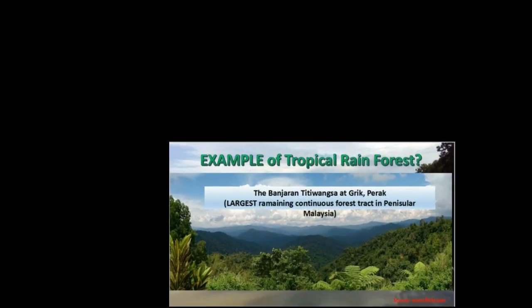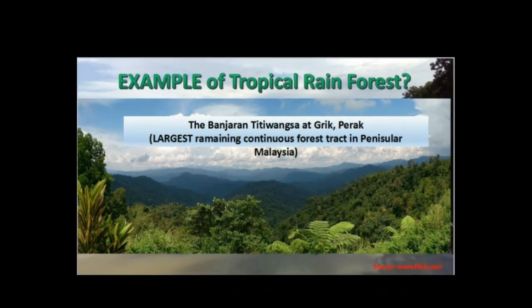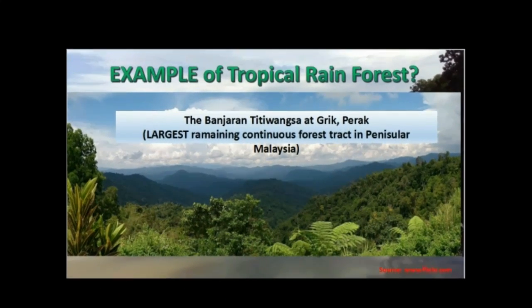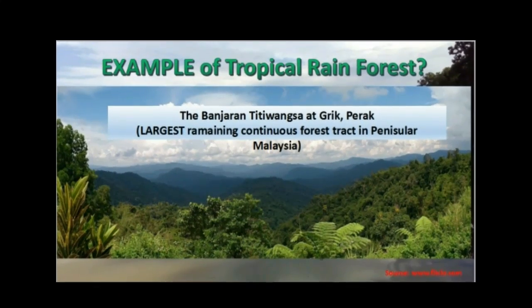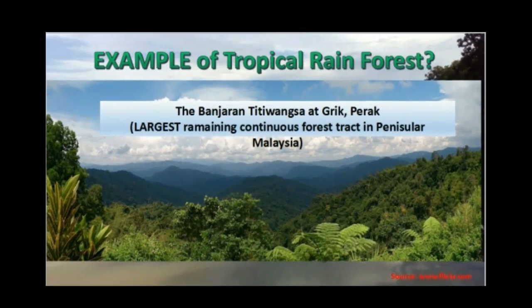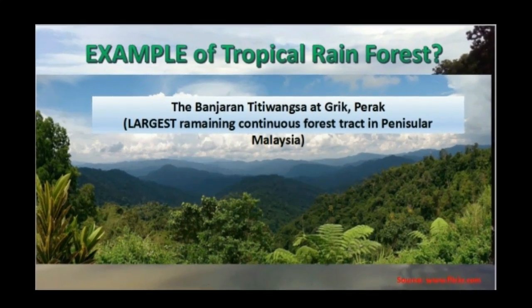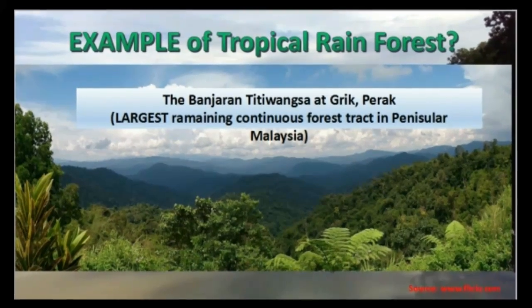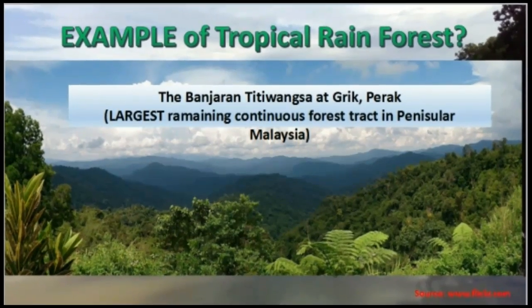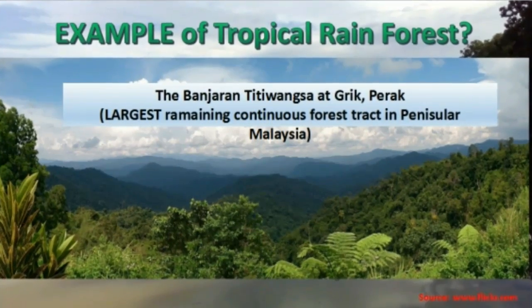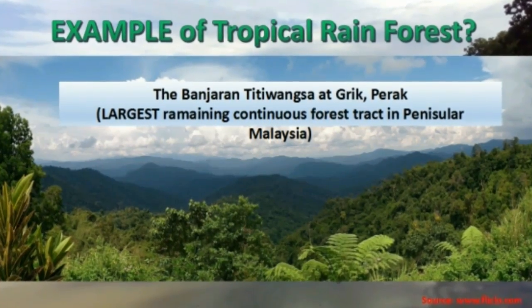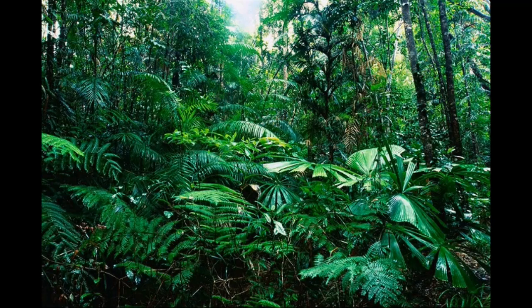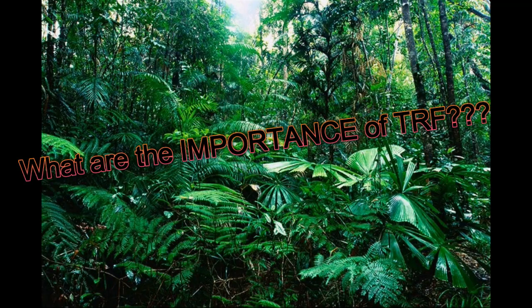An example of Tropical Rainforest is the Banjaran Titiwangsa at Creek Perak, Malaysia, which is the largest remaining continuous forest track in Peninsular Malaysia.